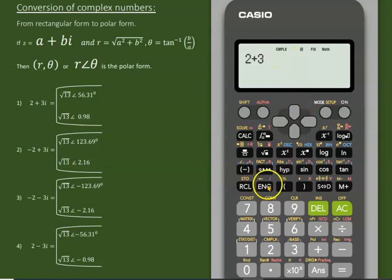You see, when your mode is on it will come automatically, i for the imaginary unit. Now we'll click shift and then complex options. And third is the option to convert this rectangular form into polar form, so just click 3.